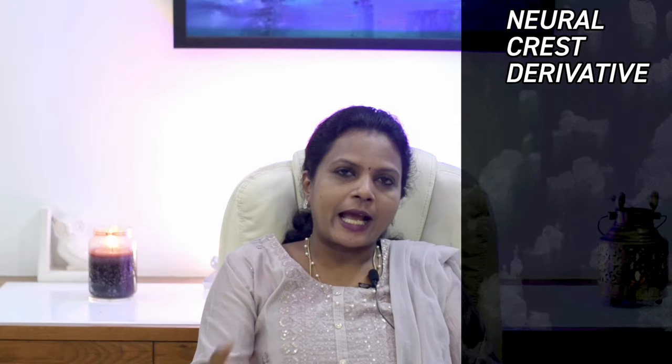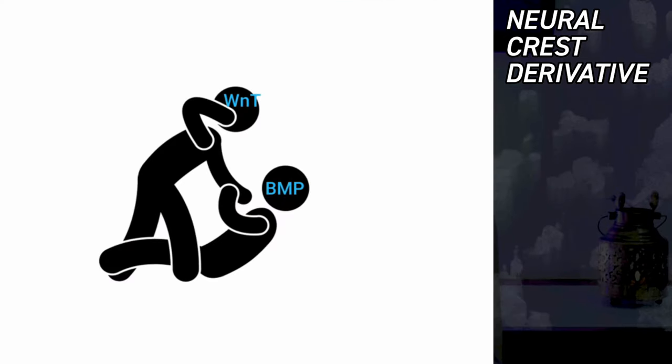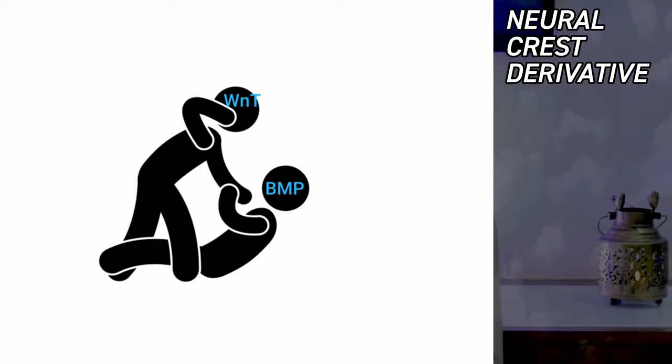Bone morphogenic factor antagonizes the action of WNT. WNT favors the formation of melanocytes; bone morphogenic factor antagonizes it. For the cells to migrate from the neural crest to the destined site, WNT has to be activated, and during that time, bone morphogenic factor should go down so that the cells reach their destiny.